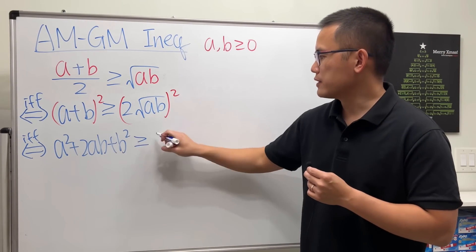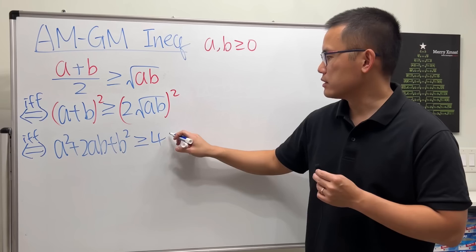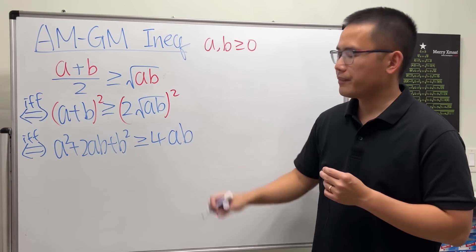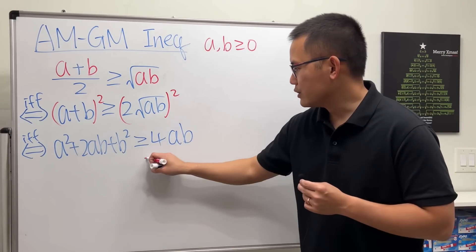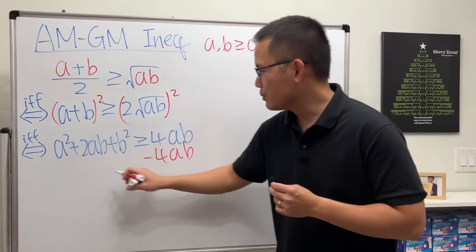2 squared is 4, square root squared cancel, and we have ab. Then we can just minus 4ab to both sides.